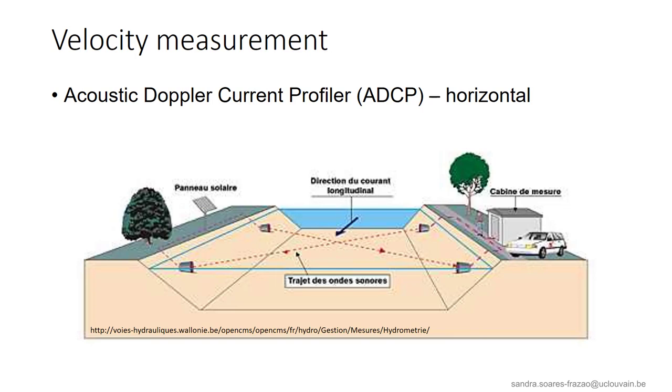Other instruments allow for measurements along a line, such as ADCP, that works on the basis of the Doppler effect between an emitter and a receiver. Such a profiler can be placed horizontally in the river, to measure the transversal velocity profile at a given depth. In this case, the selection of the depth should be done carefully. If the gauge is placed too high, it might not be submerged all the time. And if it is placed too close to the bed, the velocity might be too much influenced by the bed.